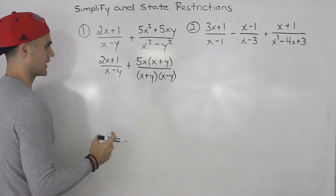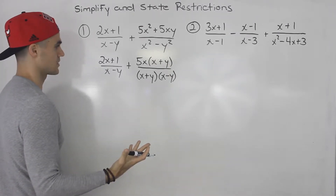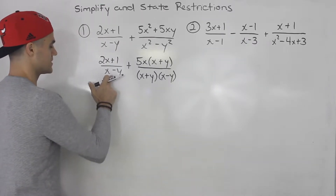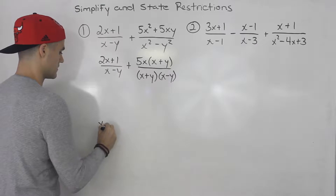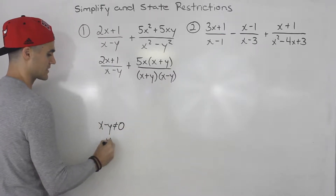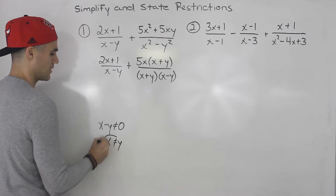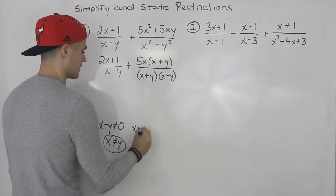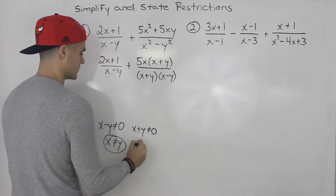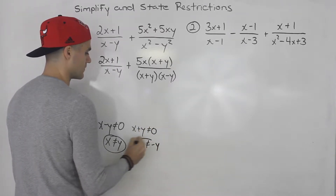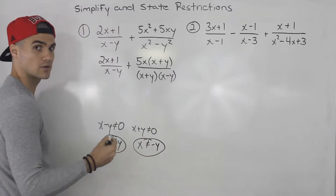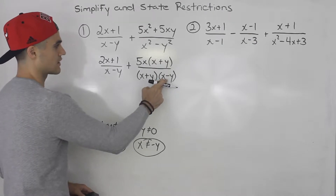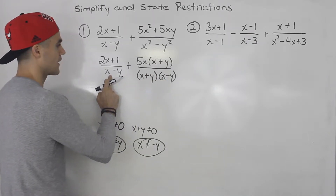Everything is now factored, so we can state the restrictions. When would the denominator be 0? x minus y cannot equal 0, so x cannot equal positive y. And x plus y cannot equal 0, so x cannot equal negative y. Therefore x cannot equal plus or minus y — those are the two restrictions. The x minus y factor appears in both denominators, so that's already covered.